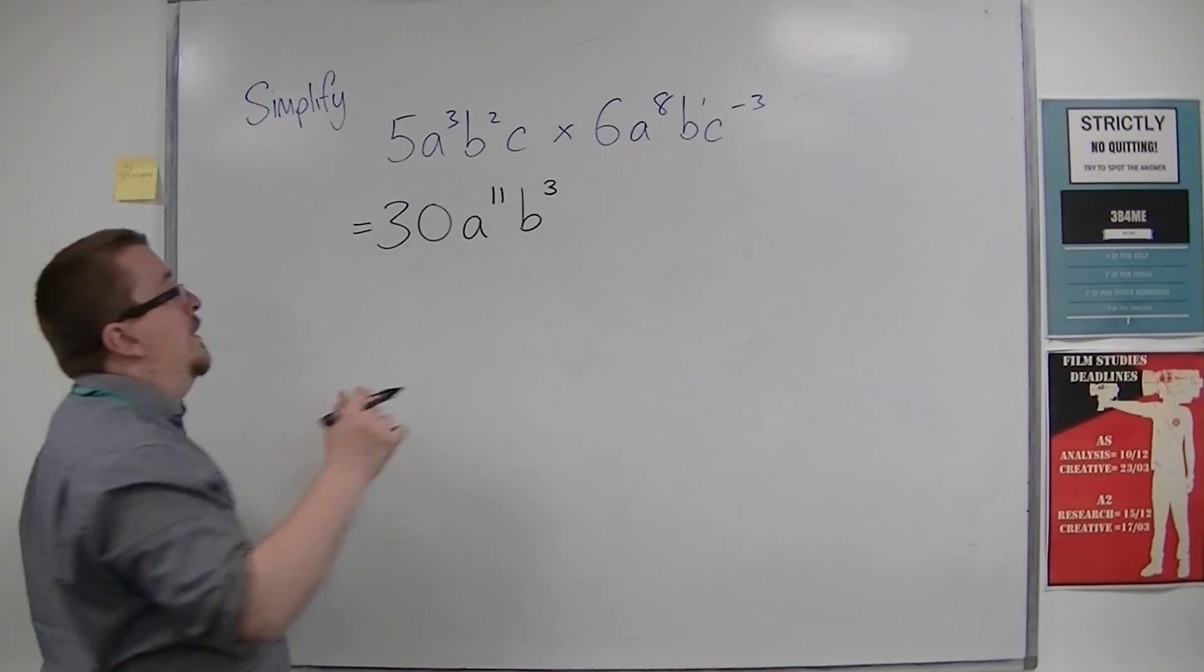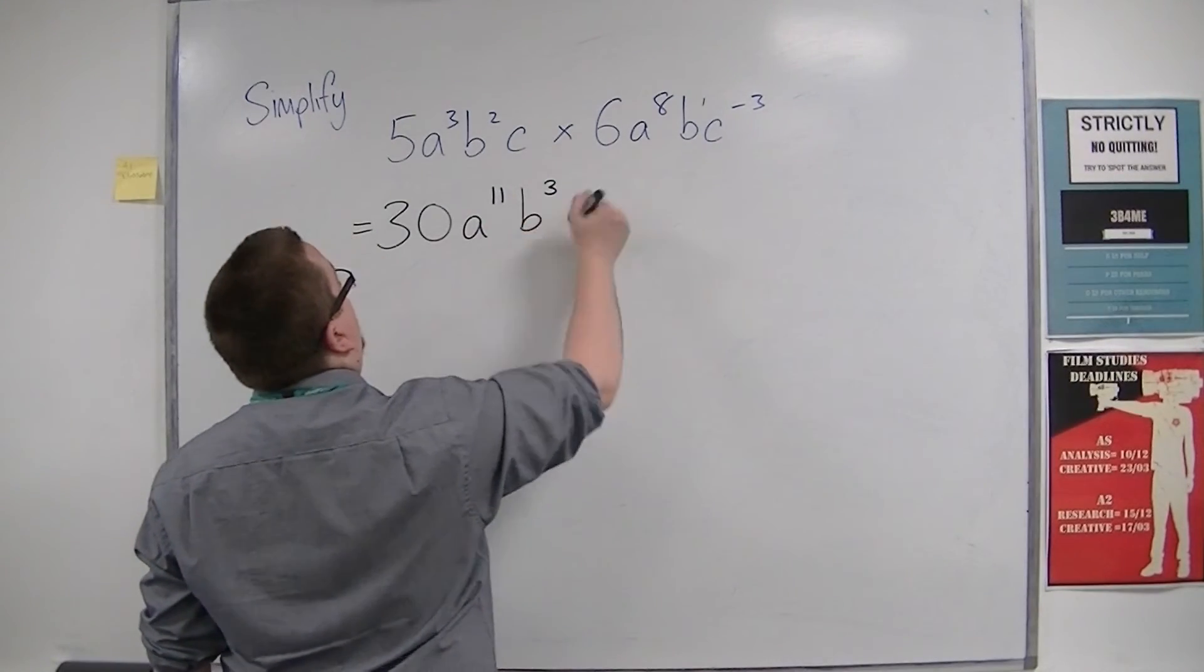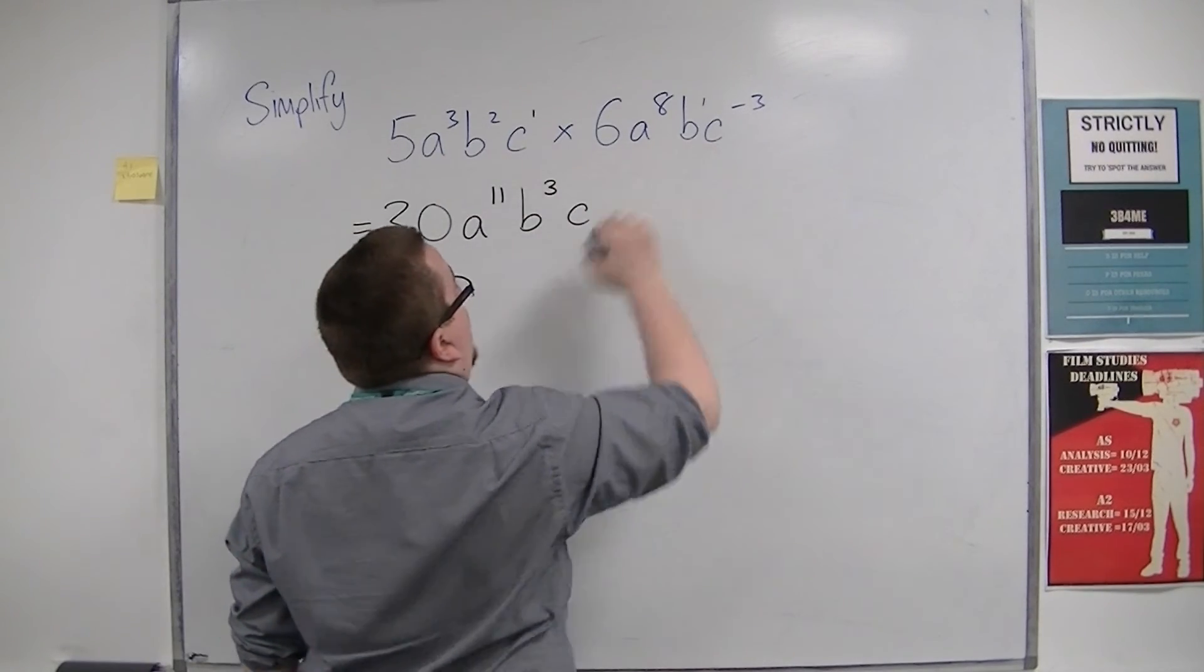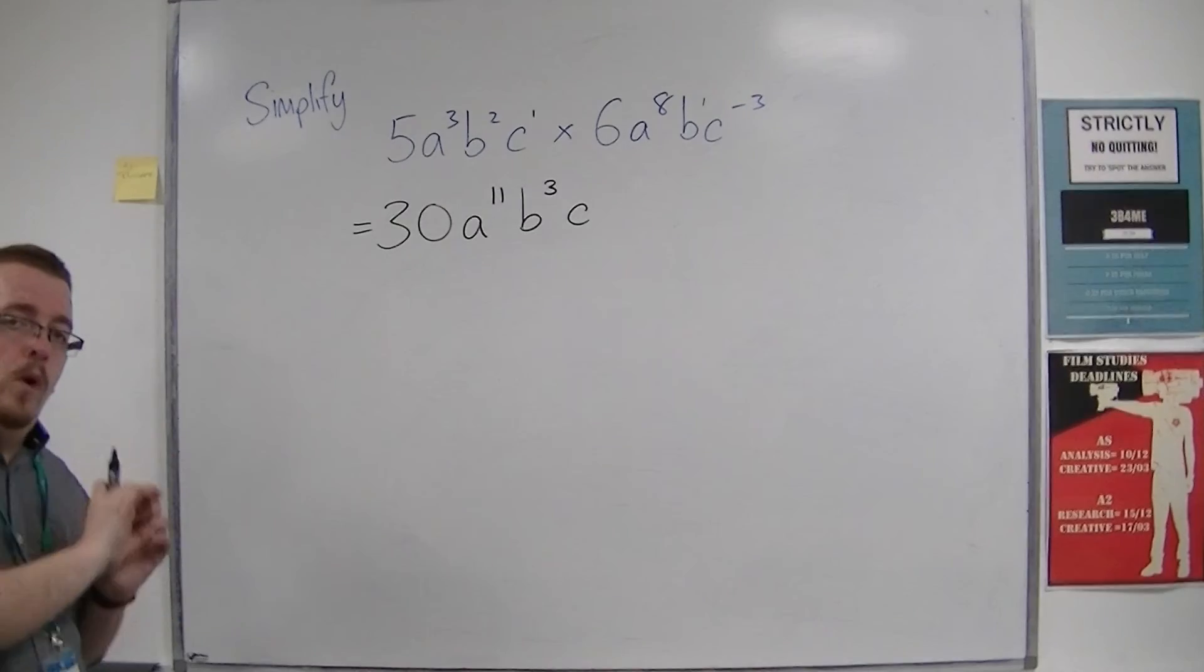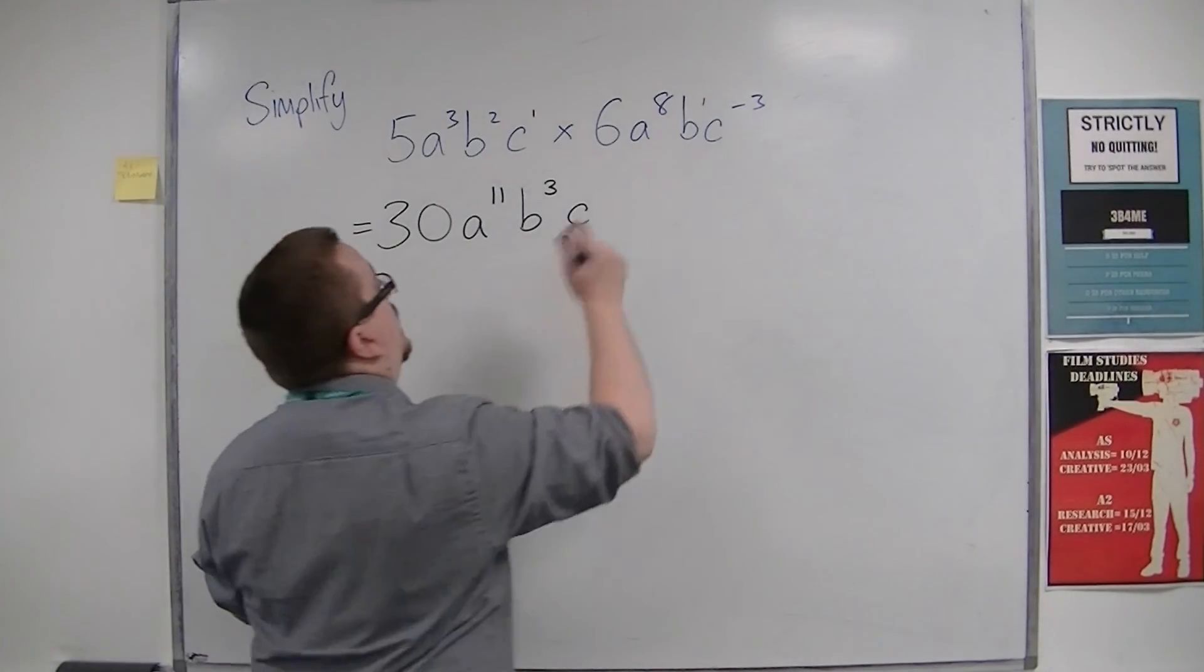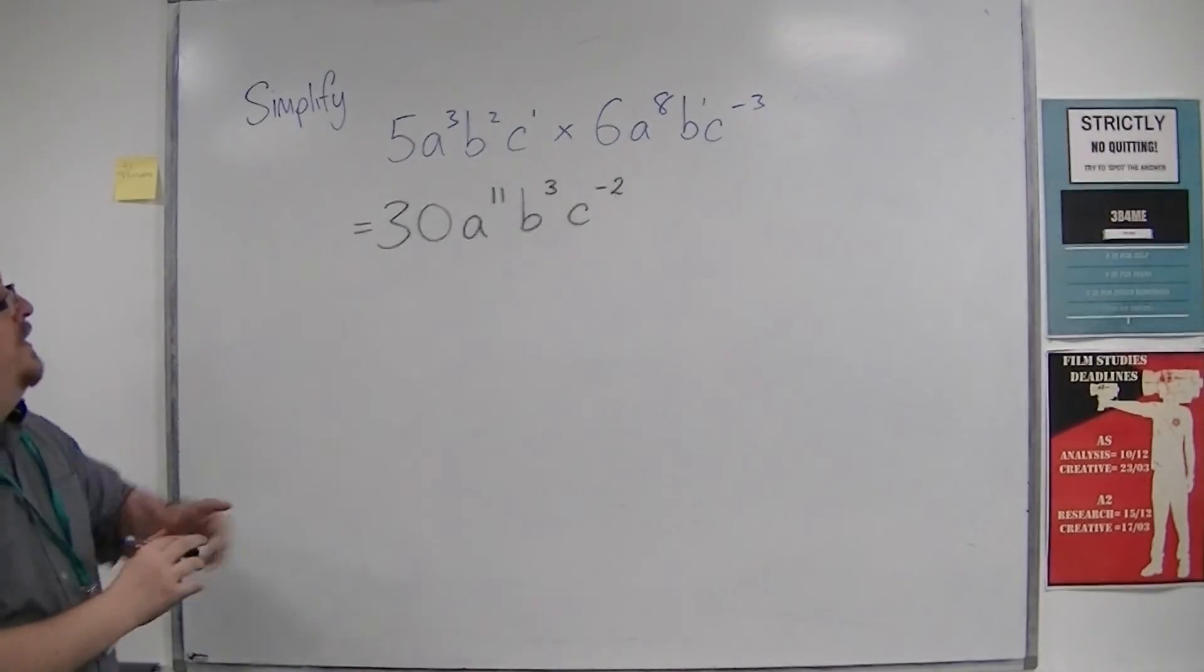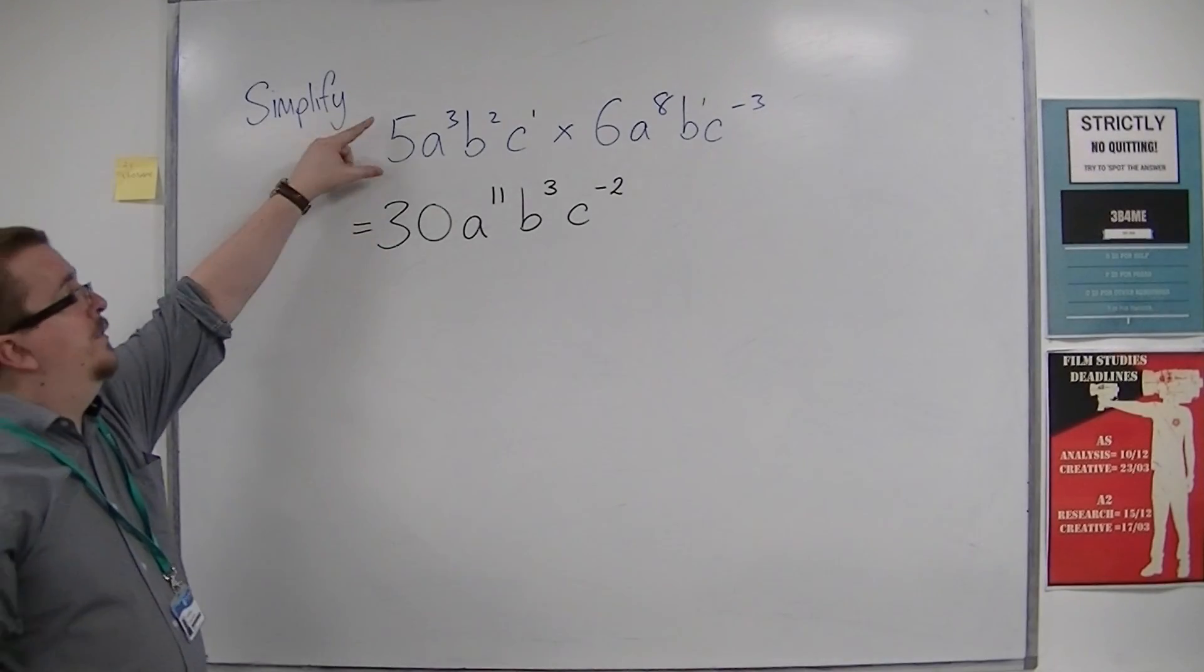Then finally, we have the c's. Here we have a singular c, so c¹, times c⁻³. So adding 1 and minus 3 together, we get minus 2. And so this is the simplified version of that.